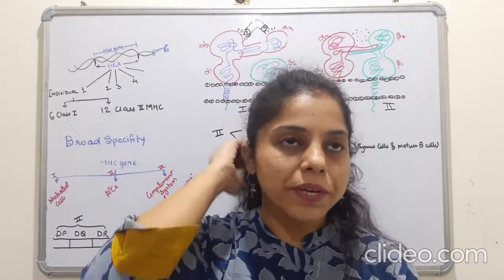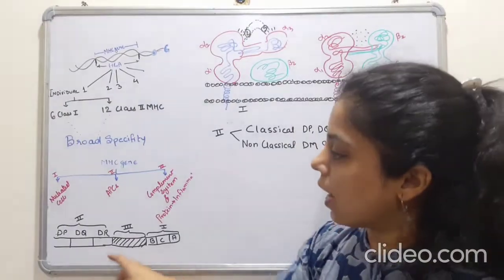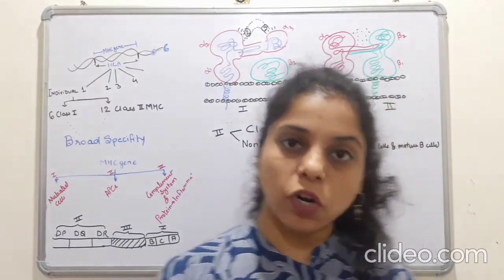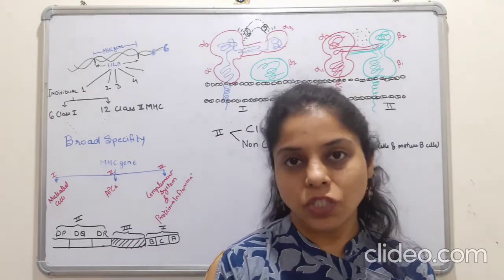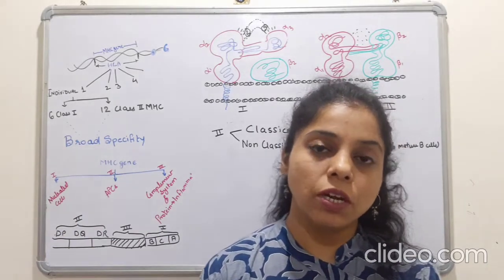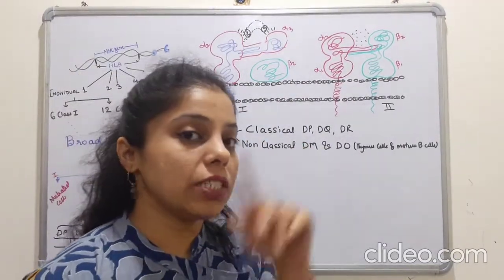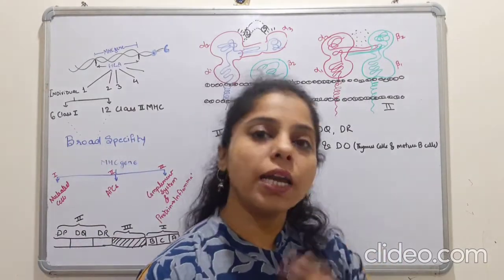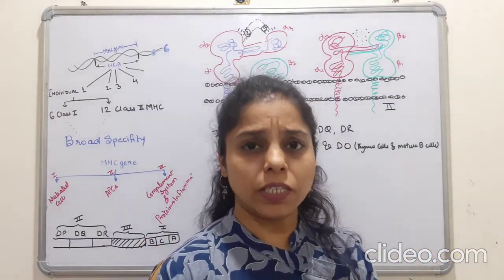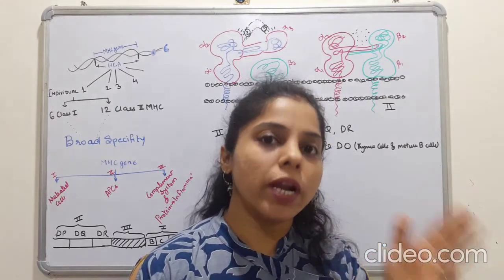If we talk about Class 2 molecules, the genes are divided into DP, DQ, and DR. DP, DQ, and DR code for both the alpha chain and beta chain. These genes are collectively called classical, and they are interspersed with non-classical genes too, similar to Class 1. The non-classical genes of Class 2 molecules are designated as DM and DO. DM mainly works in the exogenous pathway for antigen presentation — it prevents premature binding of a self antigen in the cleft during Class 2 antigen processing.